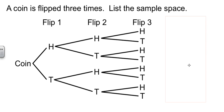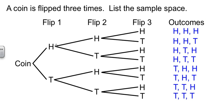So our sample space is all these possible outcomes. We could get heads, heads, and then heads again. We could get heads, heads, and then tails. Heads, tails, heads. Heads, tails, tails. Tails, heads, heads. Tails, heads, tails. Tails, tails, heads. Or tails, tails, tails.